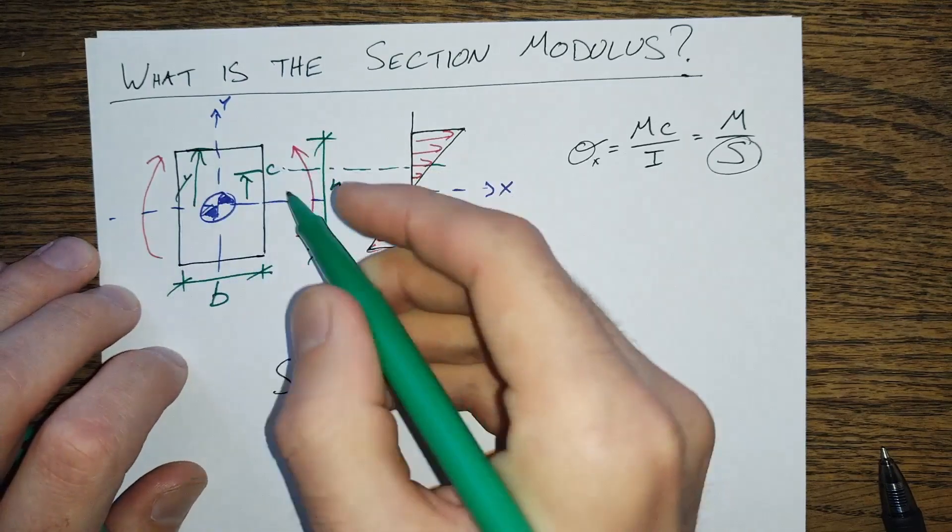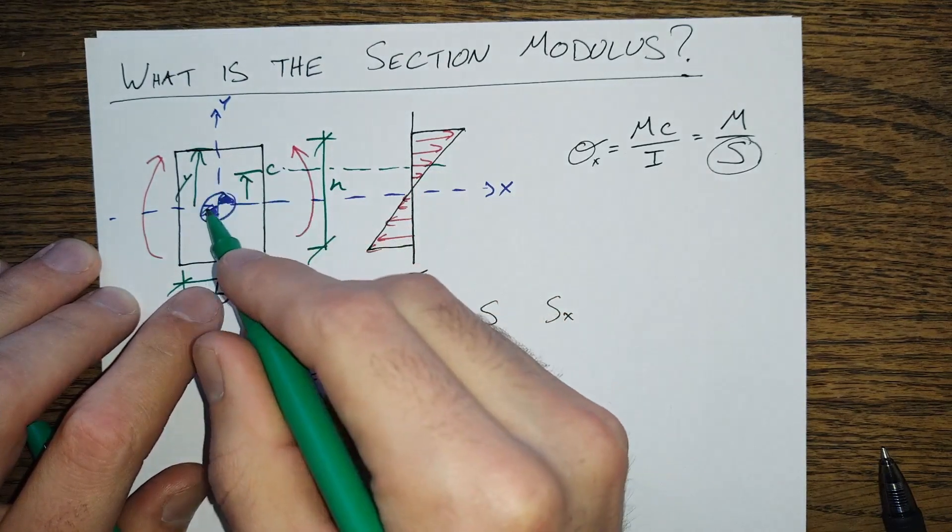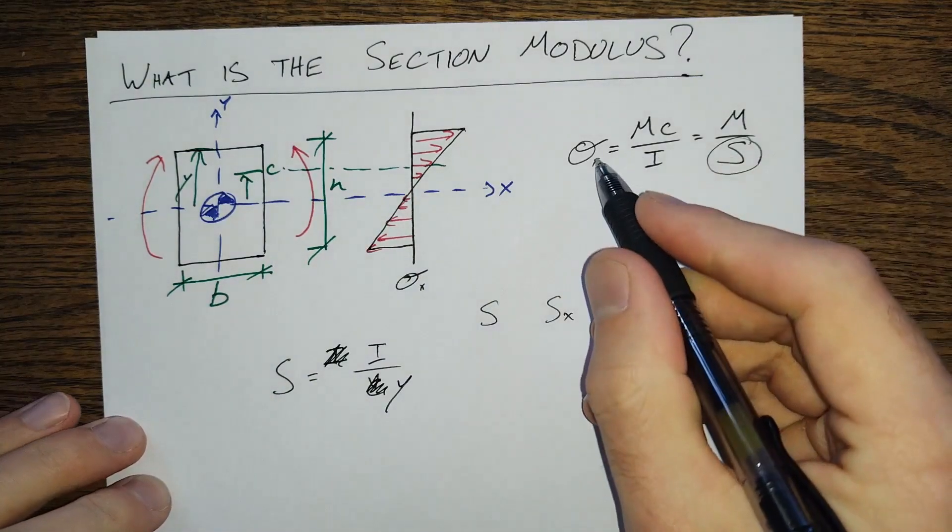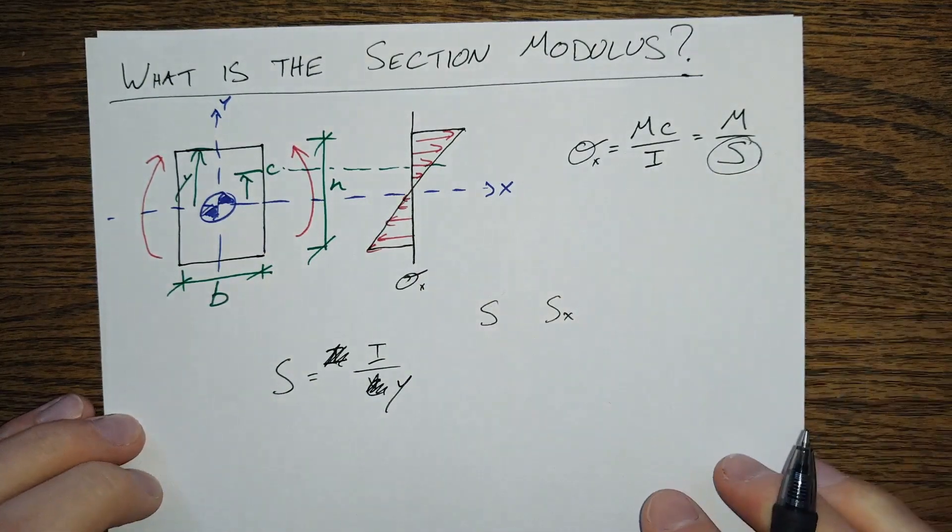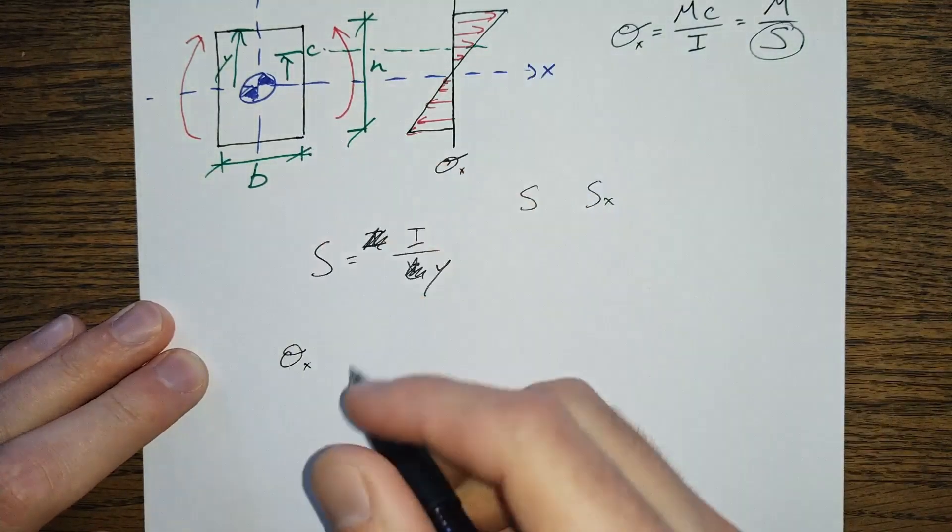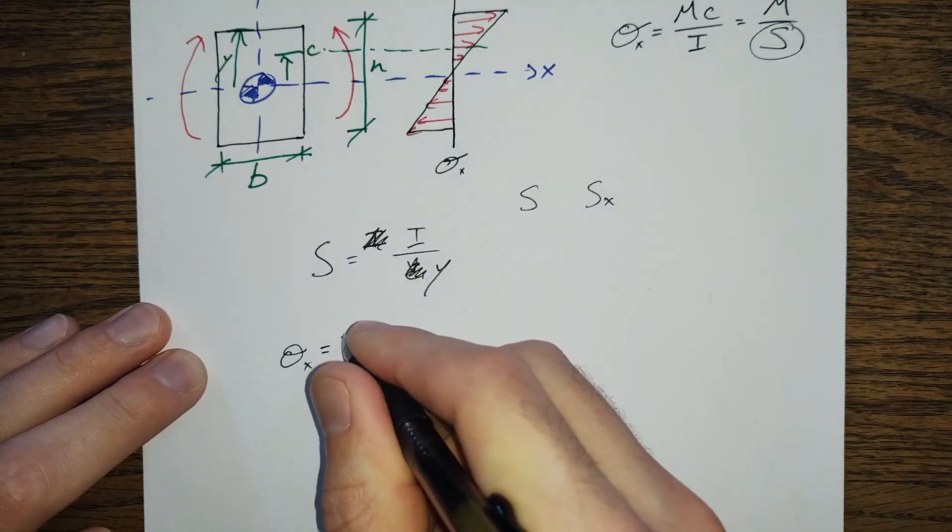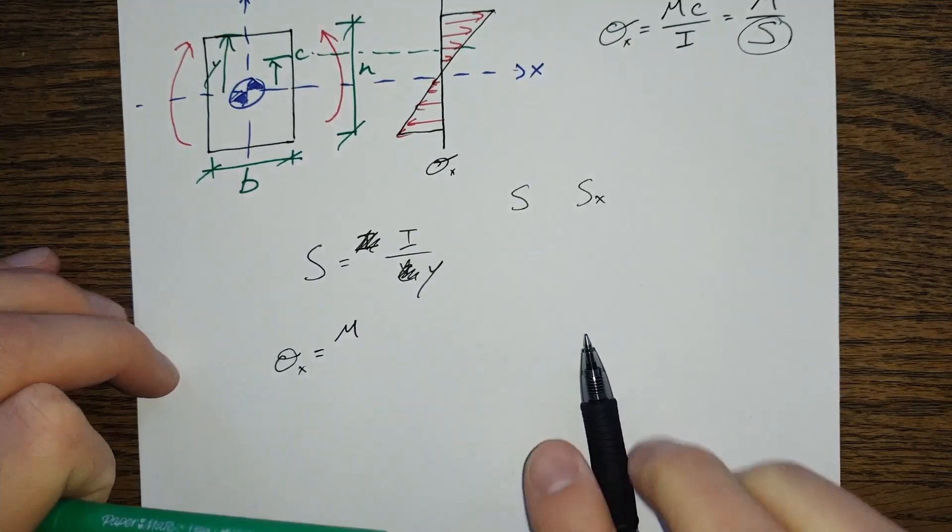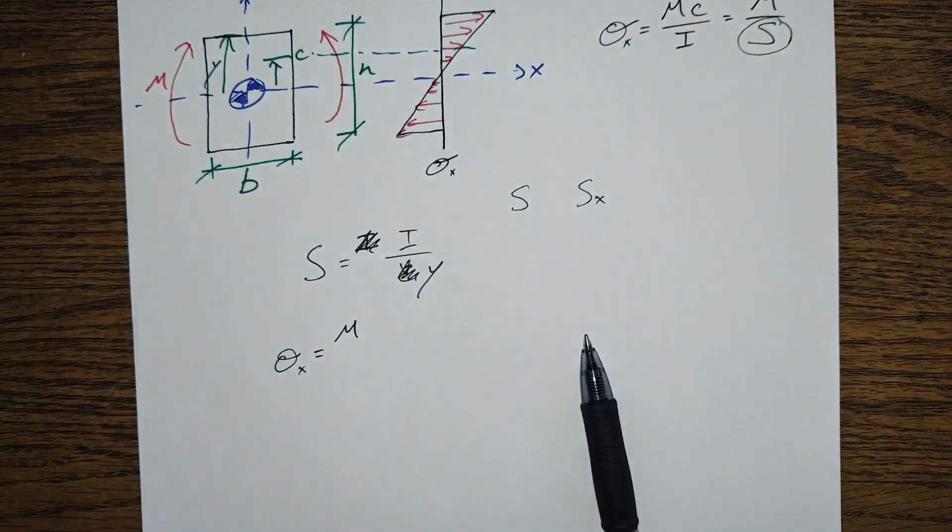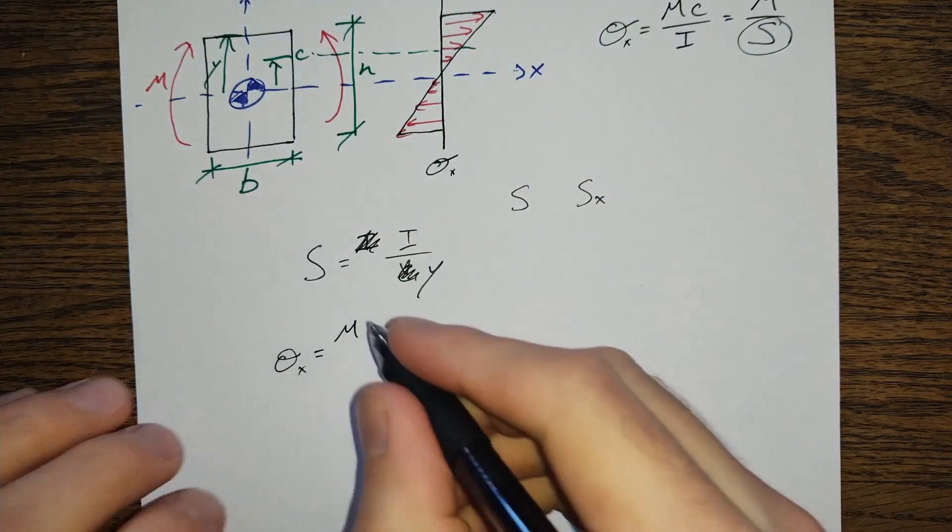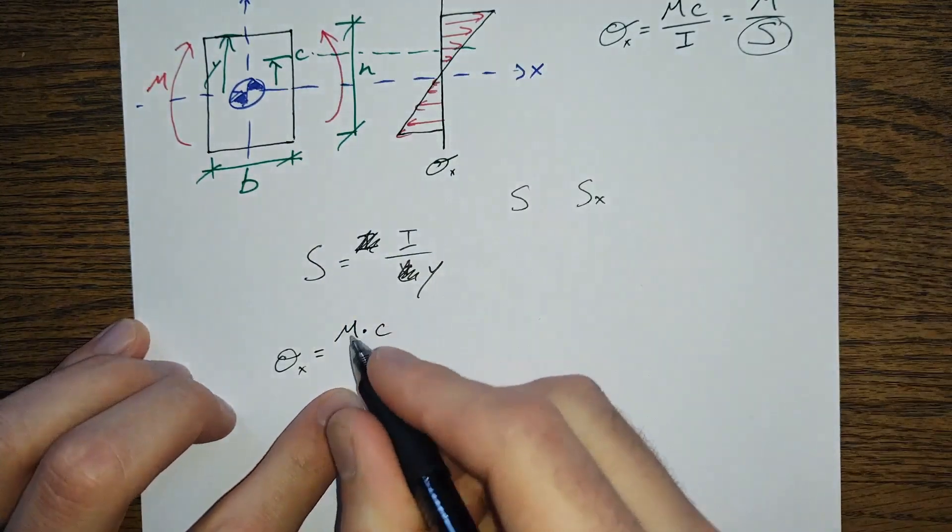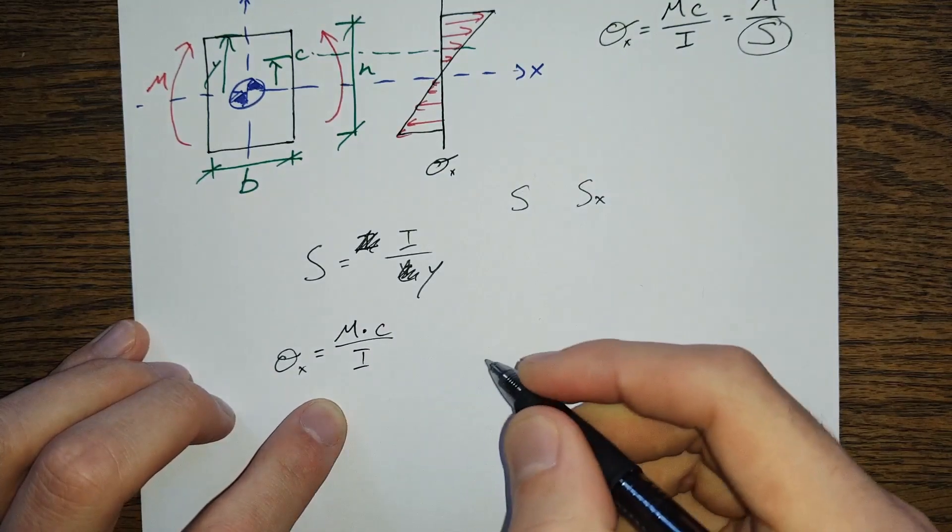Then the stress is proportional to that distance from the neutral axis. So the maximum stress here is at distance Y, which is the maximum distance C from the neutral axis. So if we take this equation up here, the stress in the X direction is equal to the applied moment M, which is this right here.